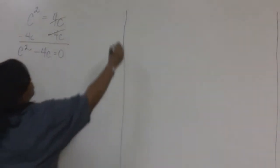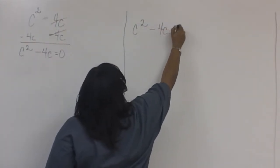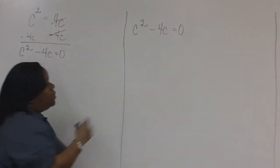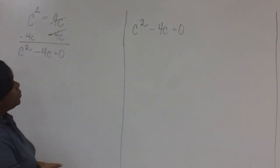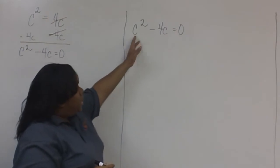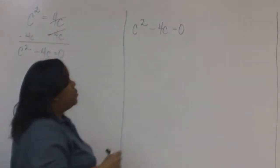I'll write it here. Now that the equation has been set equal to zero, we're ready to factor. Notice that C is common to both terms, so we'll factor out the C with the lowest exponent.